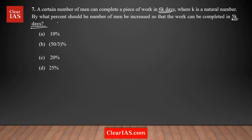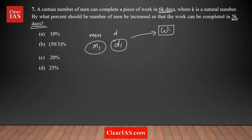You have a group of people working. Before we solve this question, I want to discuss the basic concept of how to deal with group work situations — a group of men working a job. Let's say you have M1 men and they are working for D1 days to complete a work W. This is the work they are completing — M1 men working for D1 days, completing W work.